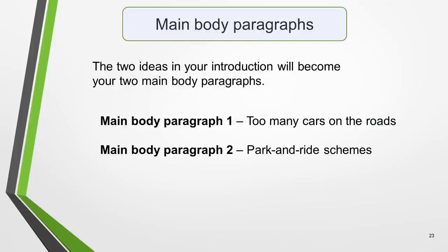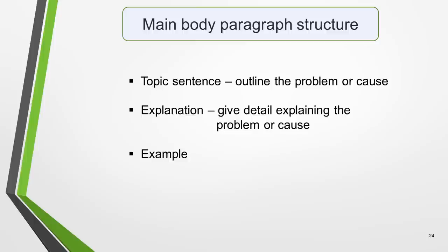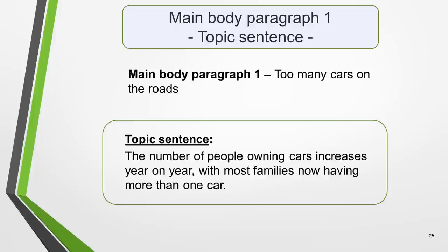The two ideas in your introduction will become your two main body paragraphs. In main body paragraph one, we'll write about there being too many cars on the roads. And main body paragraph two will be about park and ride schemes. Main body paragraphs in problem-solution essays should contain three things: a topic sentence where you introduce the main idea, an explanation where you explain it and give more detail, and an example. The topic sentence summarises the main idea of the paragraph — that's all it needs to do so it doesn't have to be complicated. It plays an important role in ensuring that your ideas flow logically from one to another, acting as a signpost for what's to come next.